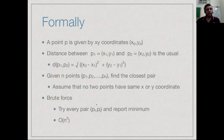A brute force solution would be to try every pair, compute d(pi, pj), and then report the minimum of these distances. This would be an O(n²) algorithm.